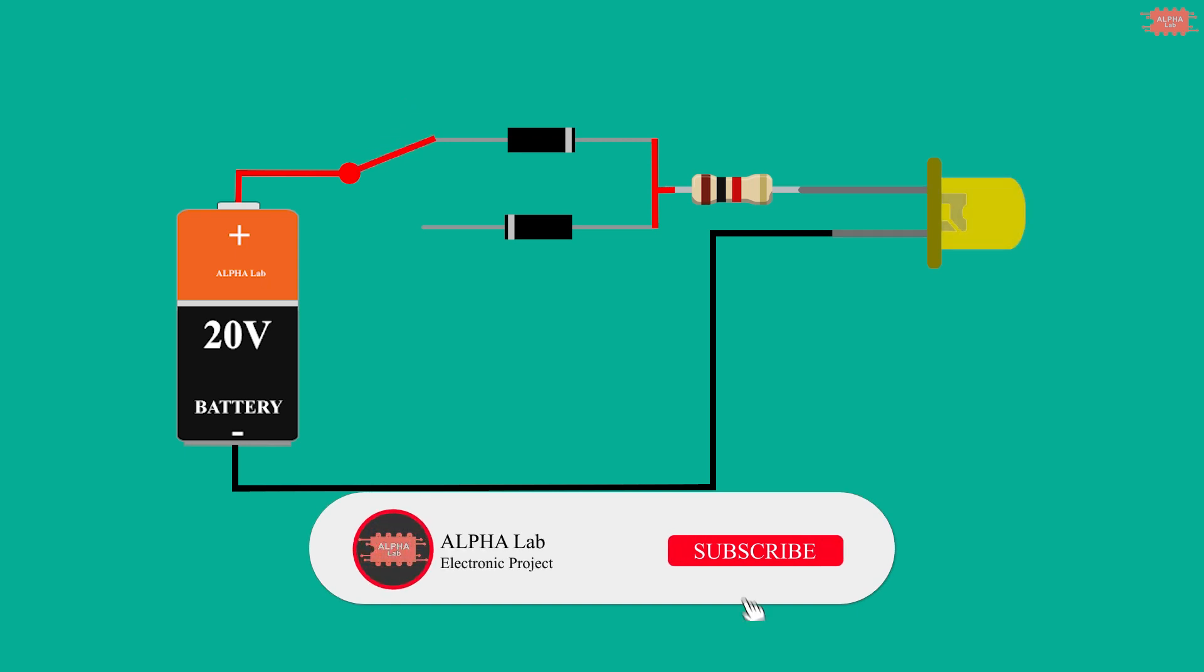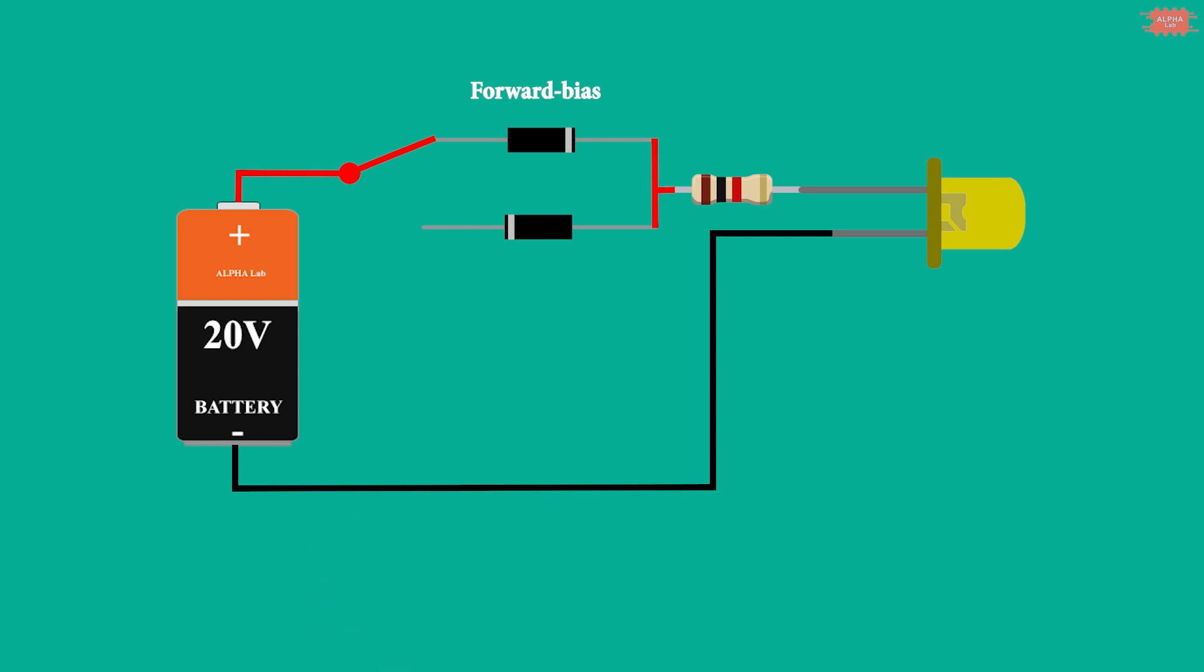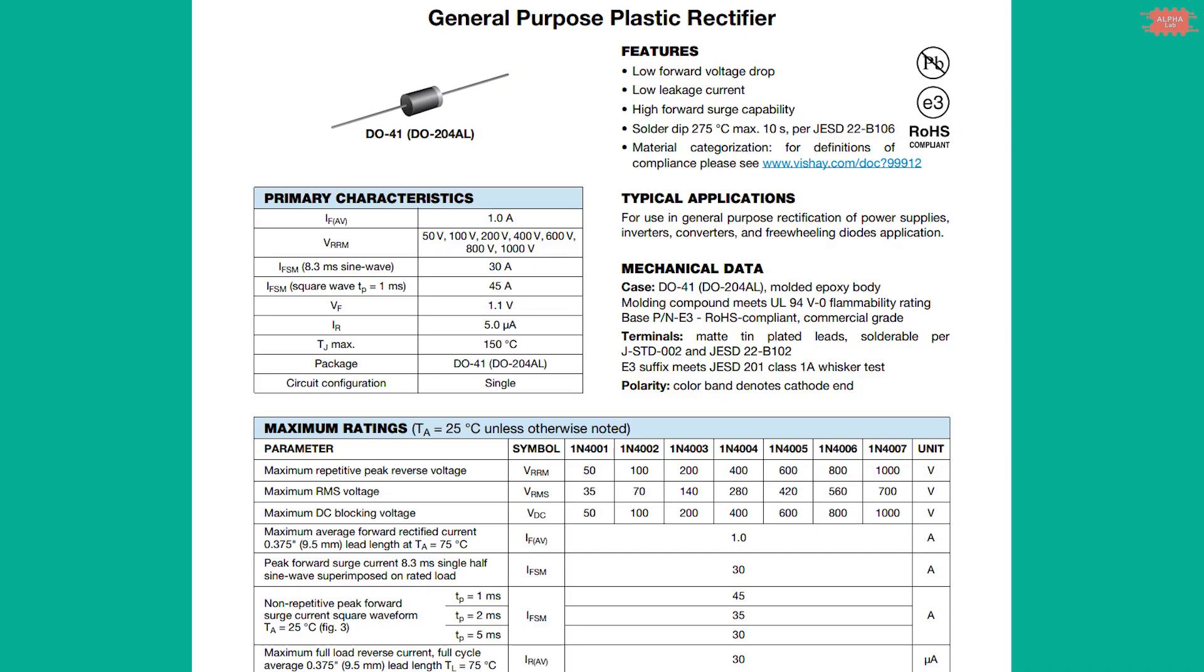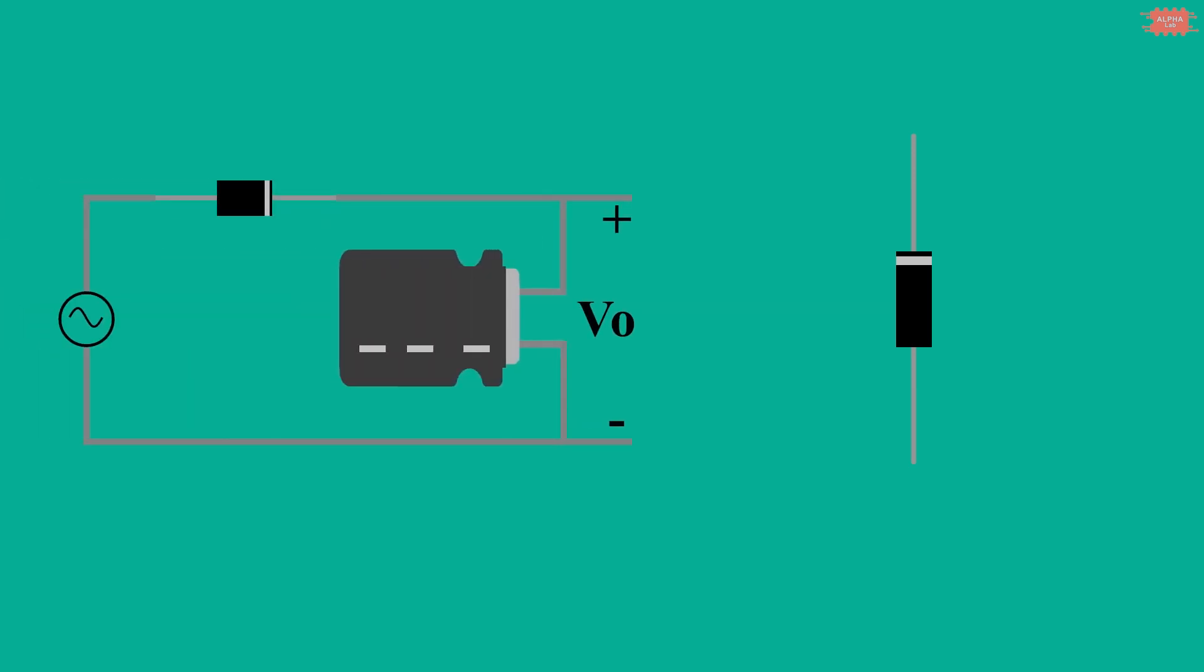Forward bias means anode voltage is greater than cathode voltage. When the cathode voltage is greater than anode voltage, it is said to be reverse bias. Each diode has basic parameters such as threshold voltage, maximum forward current, and maximum reverse voltage. The single diode is often used in half wave rectifier circuit design or other purposes.